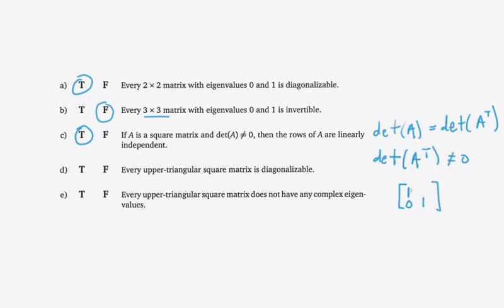We need to figure out what to put in the upper-right entry so that the geometric multiplicity of eigenvalue 1 is not 2 — we want it to be 1, so the matrix isn't diagonalizable. The trick is: when you subtract the eigenvalue from the main diagonal, the number of free variables equals the geometric multiplicity. So if we put a 1 in the upper-right entry, our matrix A has only eigenvalue 1. Then A minus λI has only one free variable, so the geometric multiplicity of λ=1 is just 1, while the algebraic multiplicity is 2. Since geometric multiplicity doesn't equal algebraic multiplicity, it's not diagonalizable. This upper triangular square matrix is our counterexample, so the answer is false.